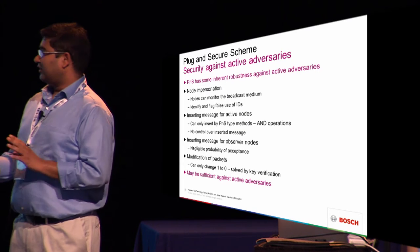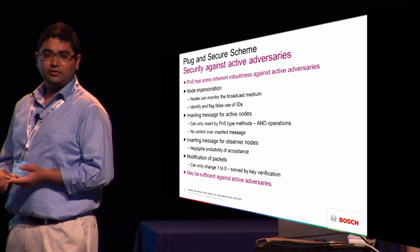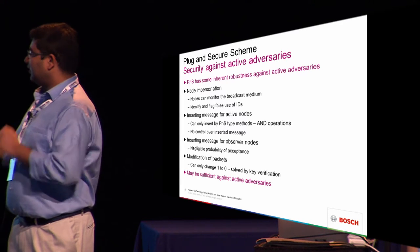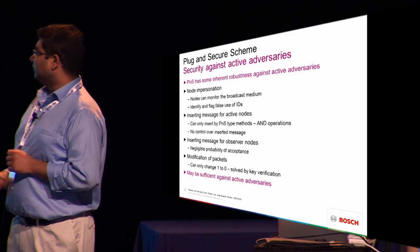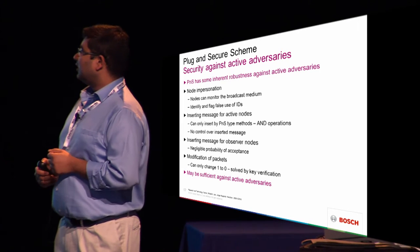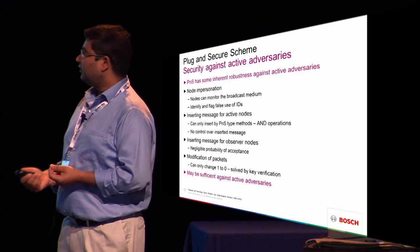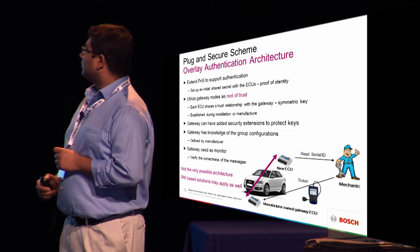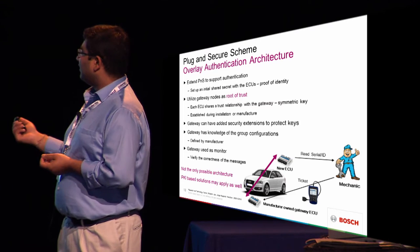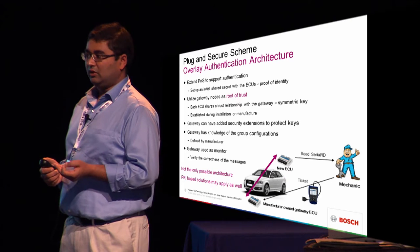We think this might be sufficient to prevent active adversaries. We don't have a formal argument for this but it seems sufficient. On top of this — which does not need any modification — if we have to provide cryptographic guarantees, we can overlay an authentication architecture on the existing scheme.